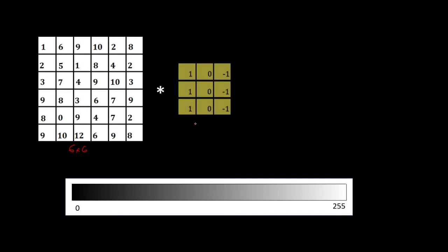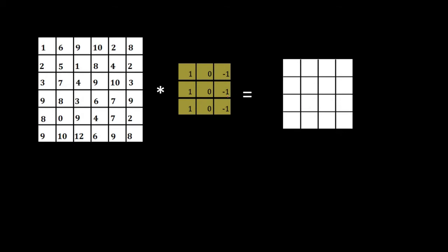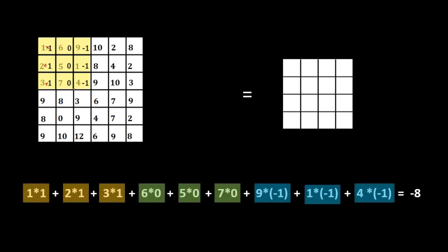We also have this filter of size 3×3 pixels. The convolution operation between this image and this filter will generate a 4×4 resultant matrix. The values of this matrix are obtained by superimposing this filter on the image and using it as a sliding window. We multiply the values in each cell and then add all the values together — so 1 is multiplied with 1, 2 with 1, 4 with -1, and so on — and all these values are summed up to create the output number, which is placed at the corresponding position.